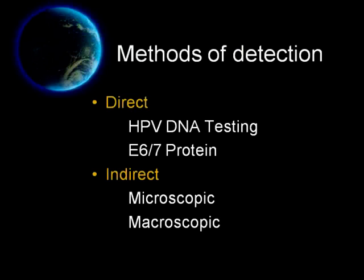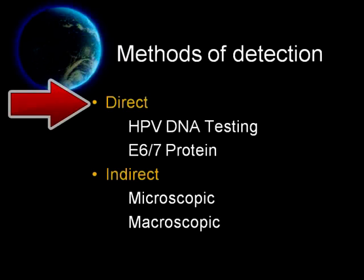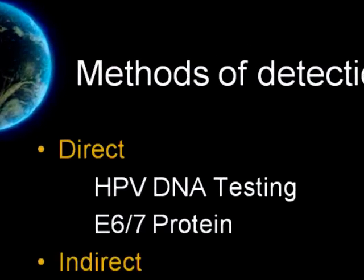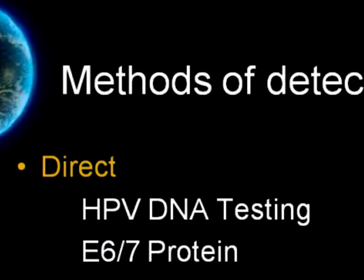How do we detect HPV infection? There are two types of HPV detection. Number one is direct detection of the HPV virus, either detection of HPV DNA or detection of oncoproteins E6 and E7.